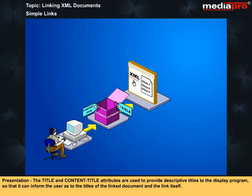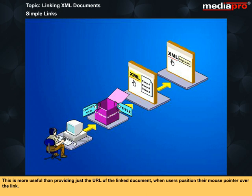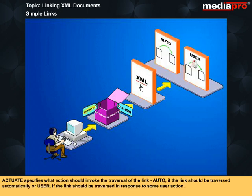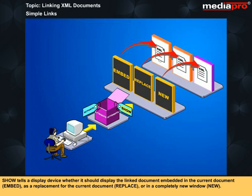A simple link has a large number of attributes so that a document author has much finer control over the link. Presentation: the title and content-title attributes are used to provide descriptive titles to the display program so that it can inform the user as to the titles of the linked document and the link itself. This is more useful than providing just the URL of the linked document when users position their mouse pointer over the link. Behavior: the actuate and show attributes play a great role in determining the behavior of the link. Actuate specifies what action should invoke the traversal of the link — 'auto' if the link should be traversed automatically, or 'user' if the link should be traversed in response to some user action. Show tells the display device whether it should display the linked document embedded in the current document, as a replacement for the current document, or in a completely new window.